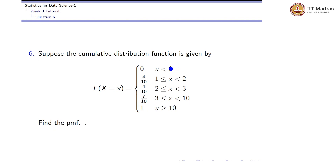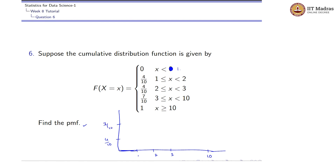They are asking for the PMF — the probability mass function. If you plot the cumulative distribution function, the boundary values are at x = 1, x = 2, x = 3, and x = 10. These are the boundary conditions. From x up to 1 it is 0, at x = 1 we will have 4/10, then 7/10, and at the end 1.